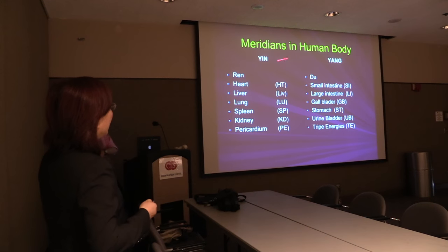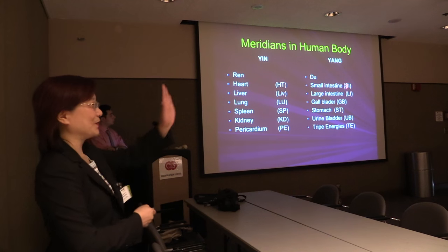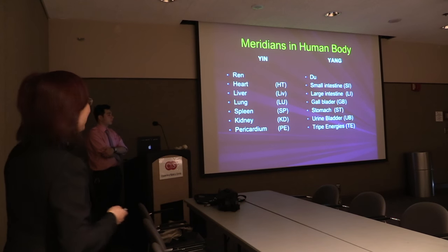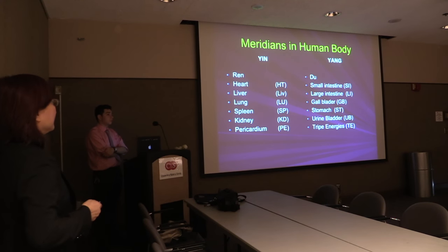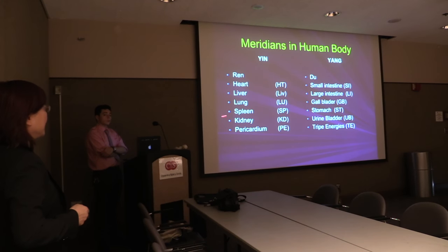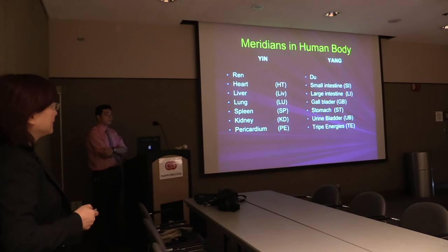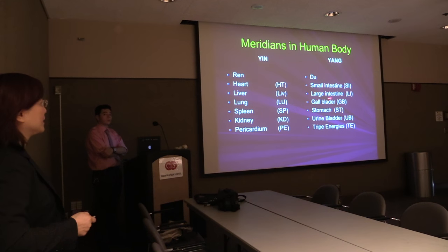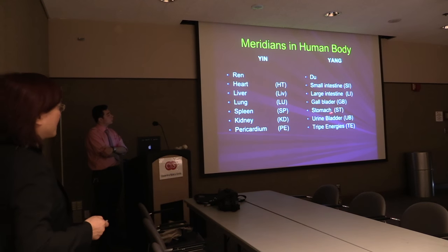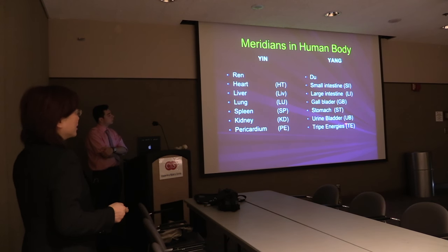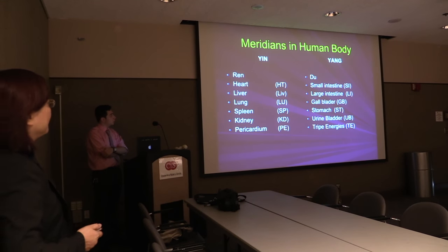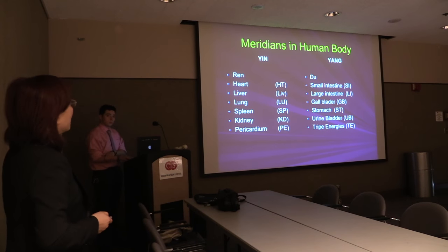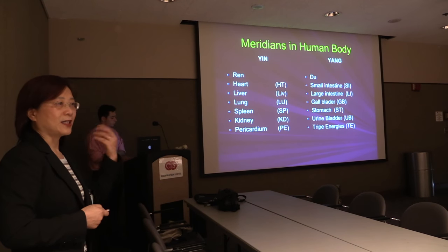There are a total of 14 meridians in the human body. You can see when we use the AcuGraph to give the patient a test, we can measure their energy and obtain the 12 meridian images. The yin meridians include heart, liver, lung, spleen, kidney, and pericardium. The yang meridians include small intestine, large intestine, gallbladder, urinary bladder, and triple energizer. All those meridians are named by each organ.